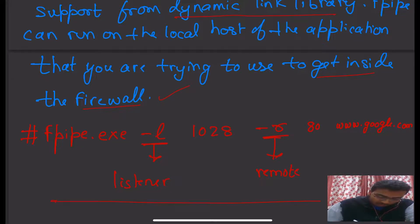We write F-Pipe.exe - exe stands for executable file. Hyphen L, where L is basically the listener, and then the port number.